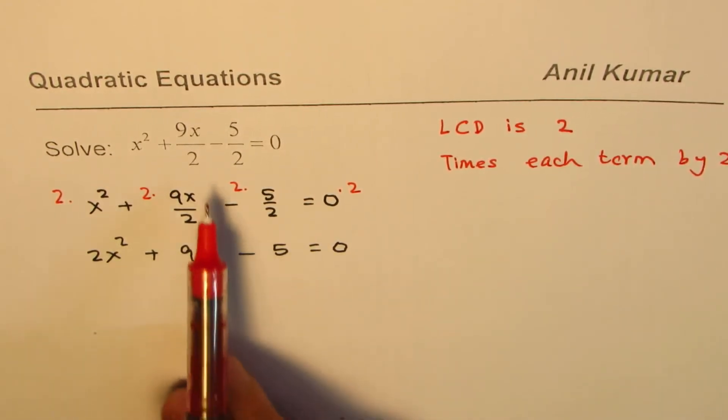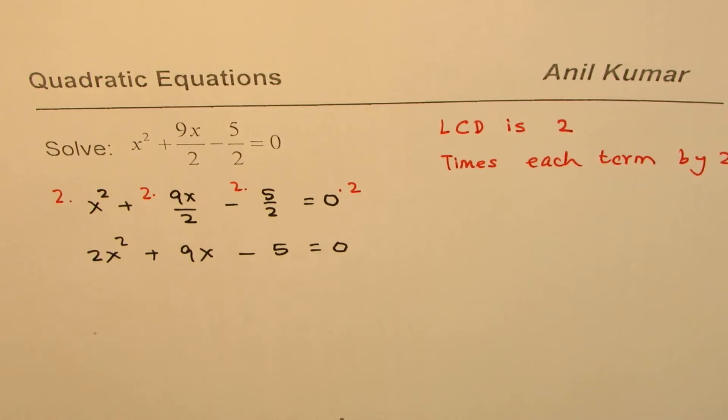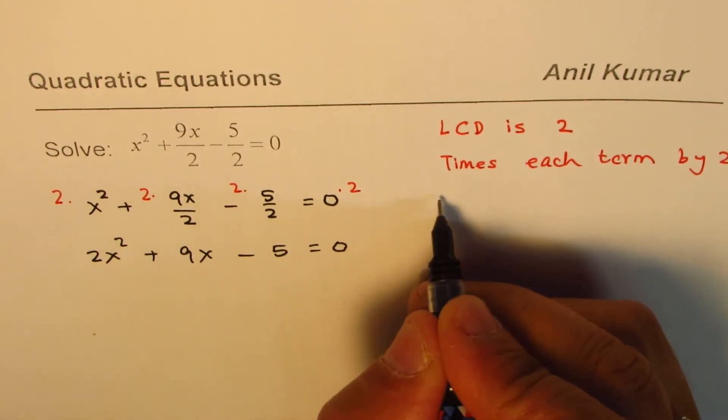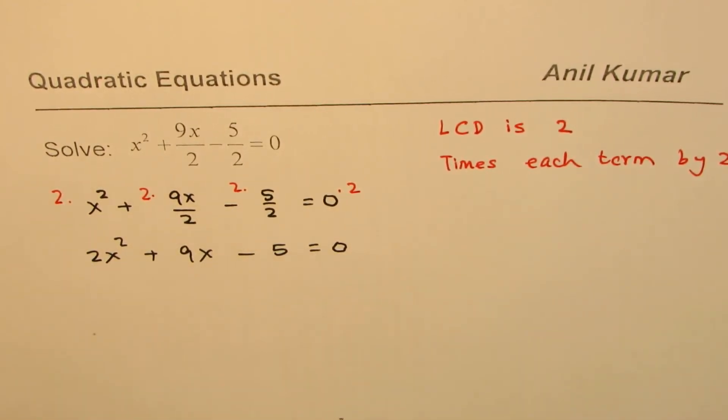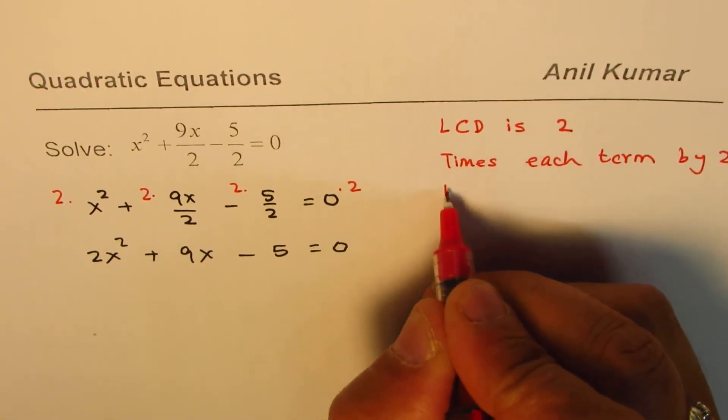So we get a quadratic equation without the fraction part. Now it becomes simpler. Now we can factor this. Let's factor using product and sum. We'll solve by factoring.